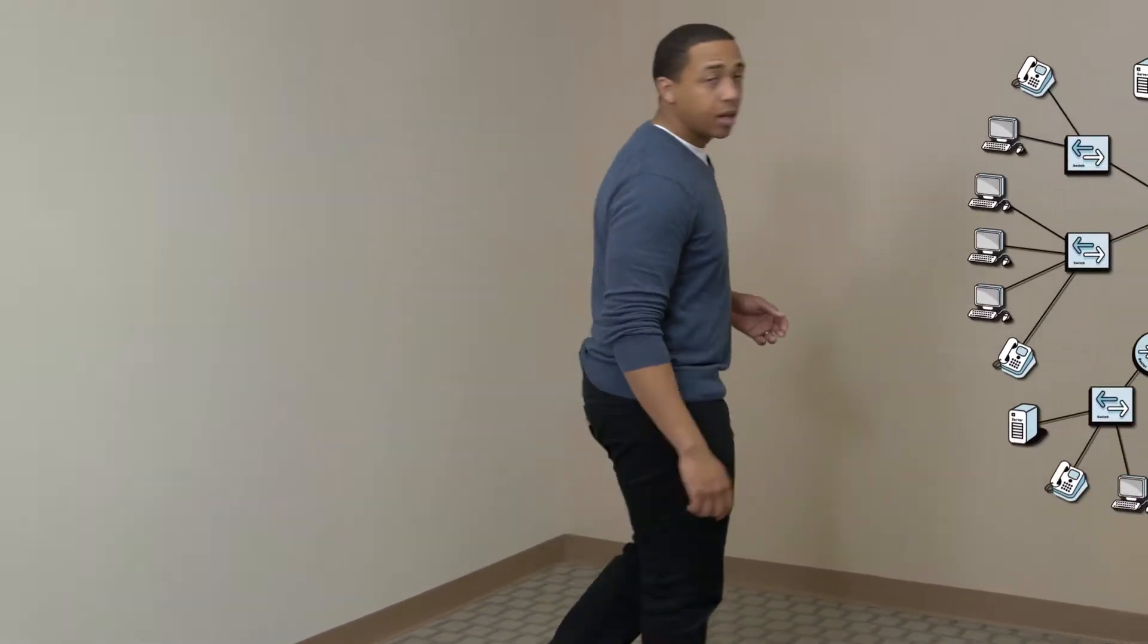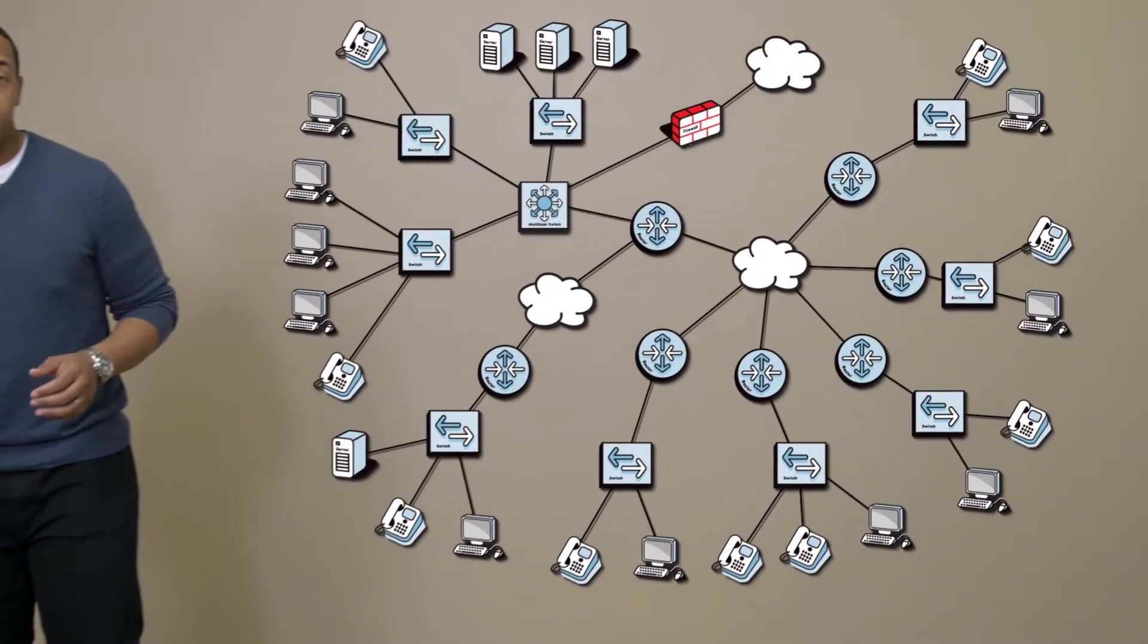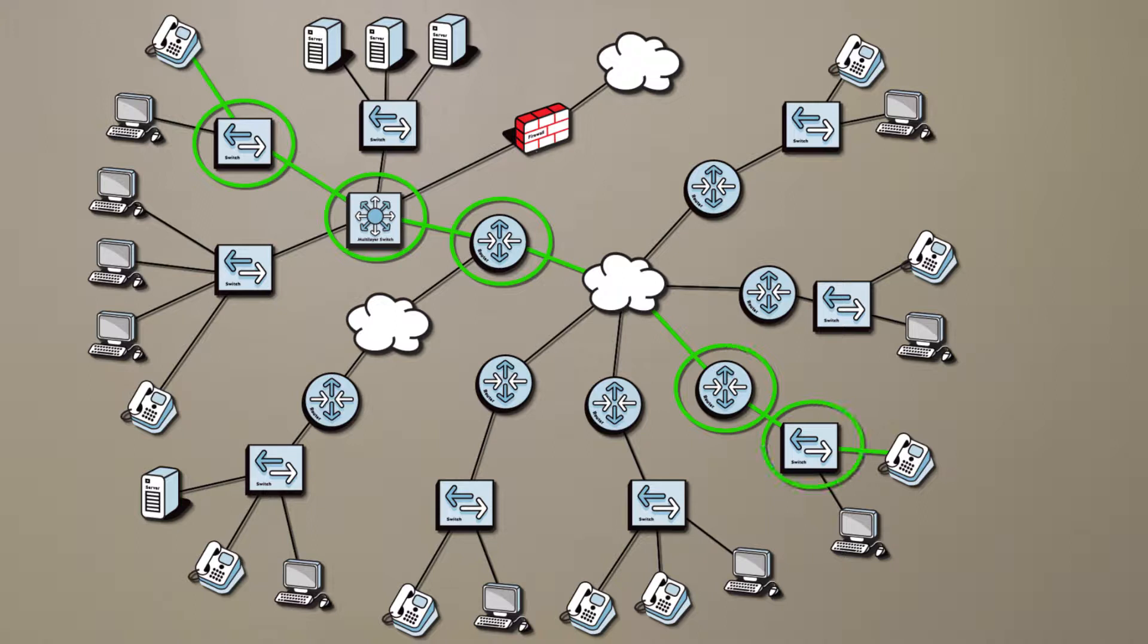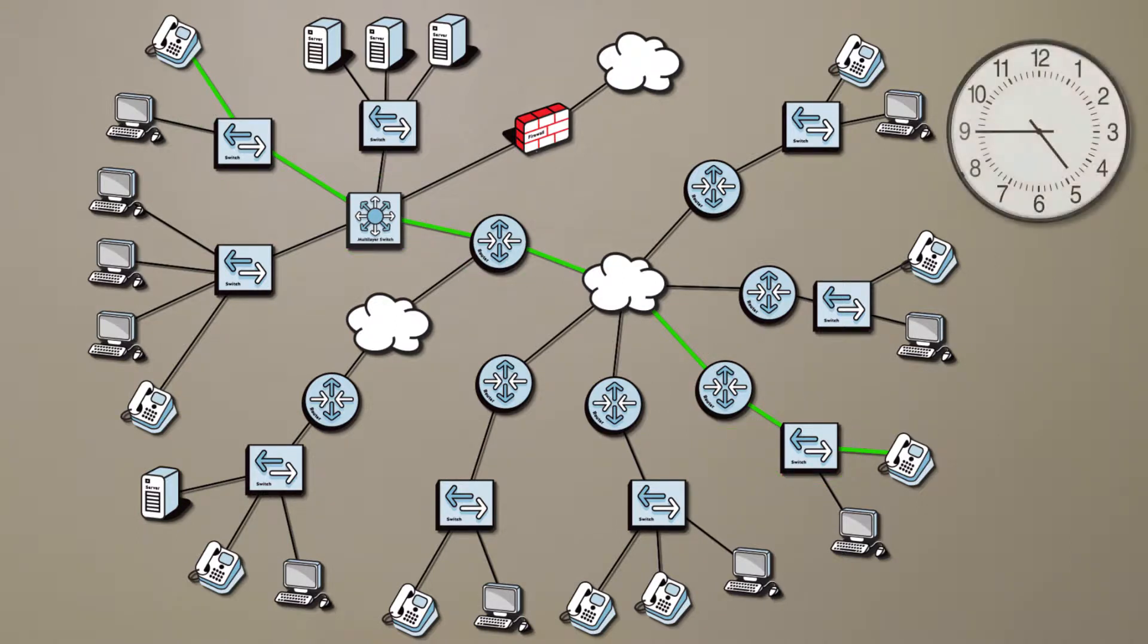When a user complains about a poor quality call that happened 20 minutes ago, you want to be able to find a specific fault and cause quickly. In order to do this, you need to be able to analyze the health, performance, and configuration of every link, switch, and router used to pass traffic between the two endpoints and see what they were doing at the time of the call.